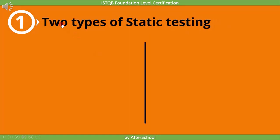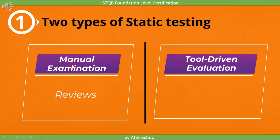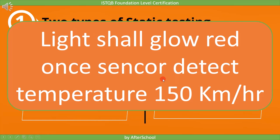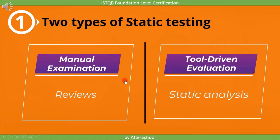The spelling of 'sensor' is wrong and the unit of temperature is mentioned as km per hour instead of degrees. We found these defects just by reading the requirement. Such testing is called static testing. We can perform static testing in two ways: manual examination and tool-driven evaluation. An example of manual evaluation is reviews, and tool-driven evaluation is static analysis.